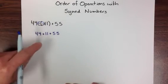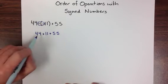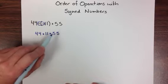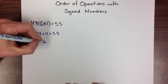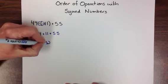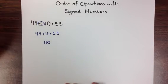Then we just do these in order. 44 plus 11 is 55, plus another 55 gives us 110.